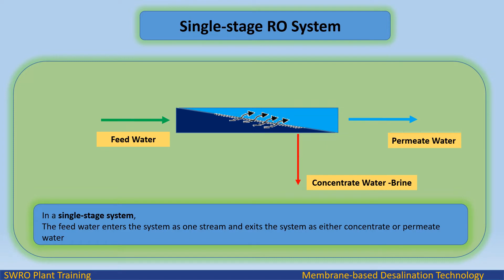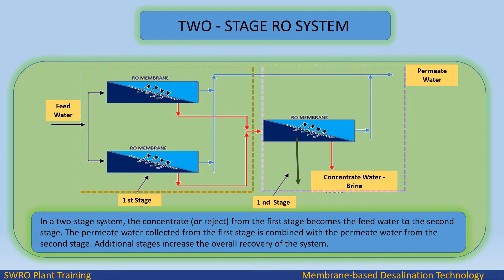In a single stage RO system, the feed water enters the system as one stream and exits the system as either concentrate or permeate water. In a 2 stage system, the concentrate or reject from the first stage becomes the feed water to the second stage. The permeate water collected from the first stage is combined with the permeate water from the second stage. Additional stages increase the overall recovery of the system.